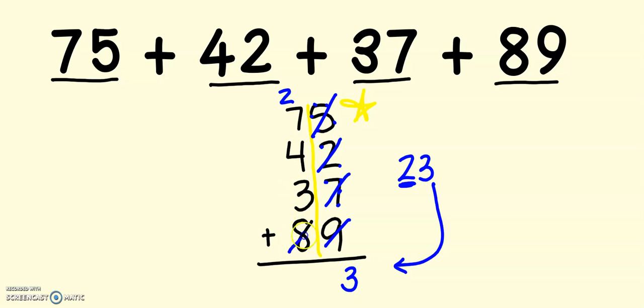Now, let's add up the tens. 8, 9, 10, 11, 12, 13, 14, 15, 16, 17, 18, 19, 20, 21, 22, 23, 24 tens. That means I made 2 new hundreds. My final answer is 243.